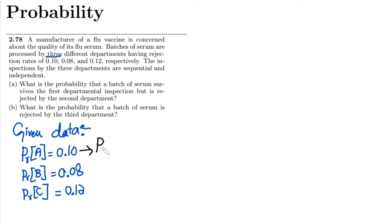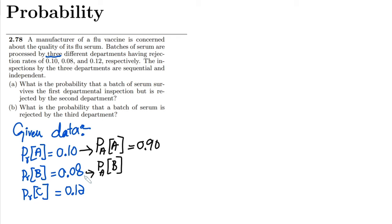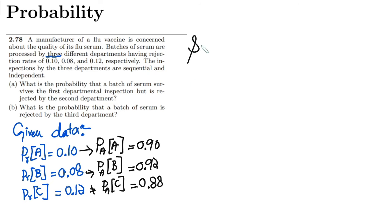On the basis of these, I can also find the acceptance probabilities. The probability of acceptance for A would be 1 minus 0.10, which is 0.90. For department B, the acceptance probability is 1 minus 0.08, which is 0.92. And the acceptance probability for C is 1 minus 0.12, which is 0.88. So these are the acceptance probabilities.